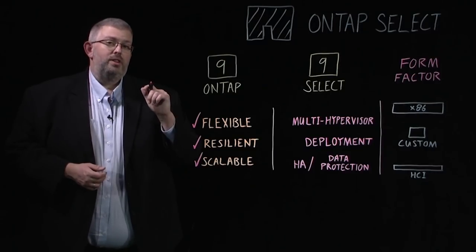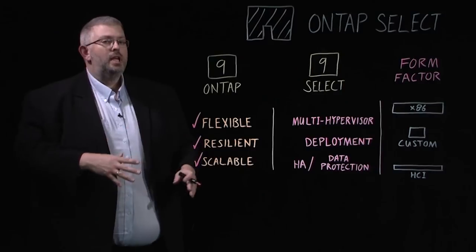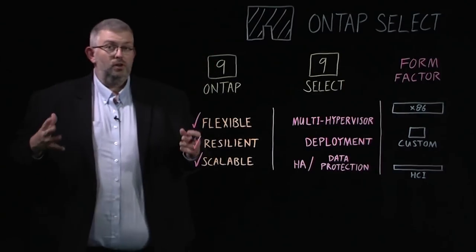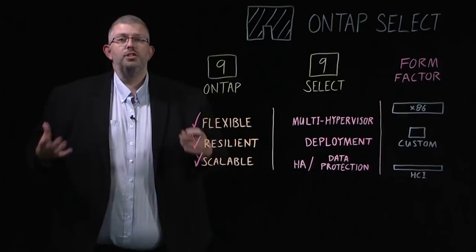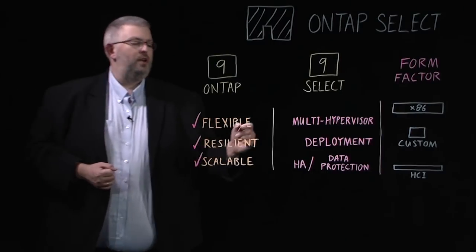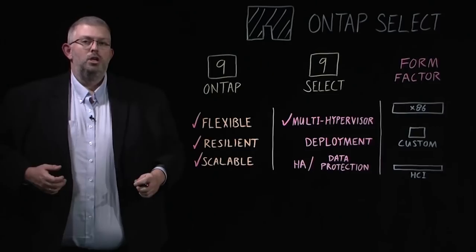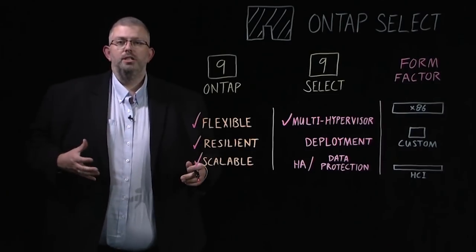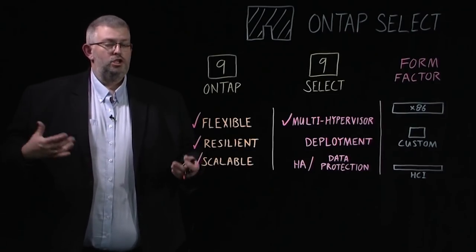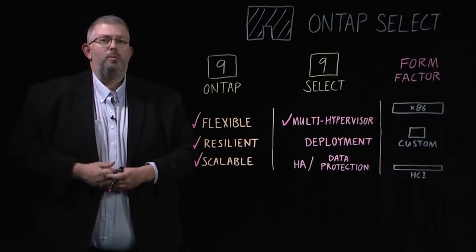Now with ONTAP Select we take all of this value and we put it in a software-defined offering. It literally is just software. It runs on the major hypervisors that are out there — it's actually multi-hypervisor, so it'll run across both vSphere and KVM. Choose one of those and go ahead and load up ONTAP Select.